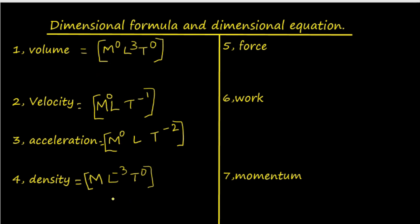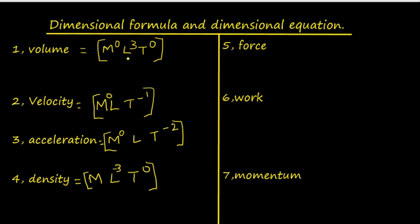While writing the dimensional formula, the dimensions of mass and time are also shown even if that physical quantity is independent of those dimensions. The three dimensions are represented in the order M, L, T. The name of the physical quantity is written on the left-hand side, and its dimensions are shown on the right-hand side within square brackets. The dimension on which the quantity does not depend is shown as raised to 0.